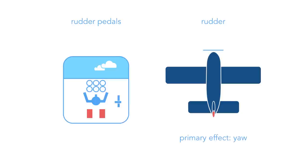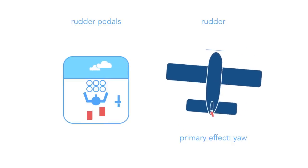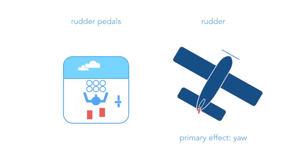The pilot uses rudder pedals to operate the rudder. Pressing the left pedal moves the rudder left and the primary effect is a yaw to the left. The right rudder yaws the aircraft to the right.